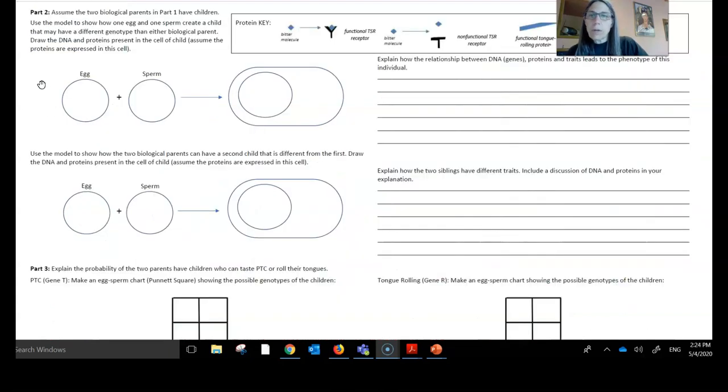In part two of this worksheet, you are now asked to do a cross of these parents, and you're asked to show how these parents could produce a child that has a different genotype from either parent. So your job is now to pick some gametes from part one, show gamete from an egg gamete, a sperm gamete. And what is that going to look like in the child?